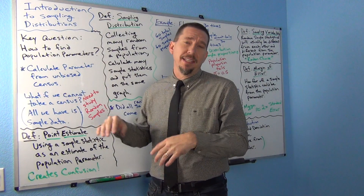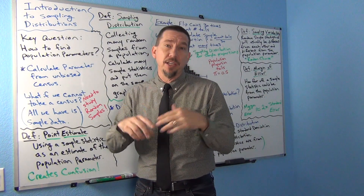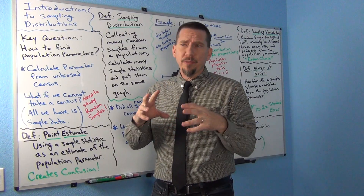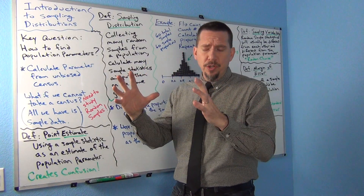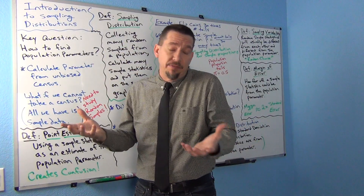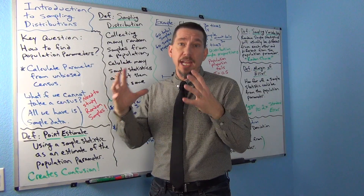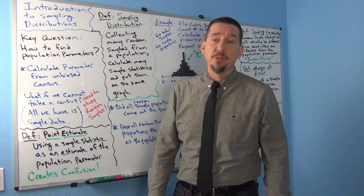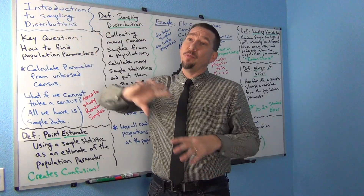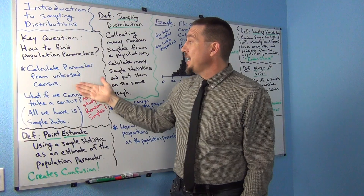If you have a census — and this usually happens when you have a smaller population — like if we were just looking at students from one high school as our population, maybe I could get data from all of the students at that high school and have a good idea of what the population mean or population percentage would be. But when you have a big population with millions of people, usually you can't do a census.